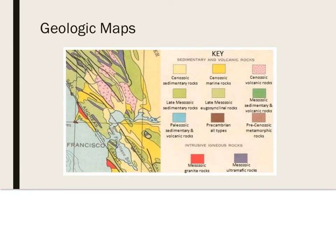Let's look at some geologic maps. They are used by geologists to share information about the rocks in a certain area. The colors on a map represent the type of rock at the surface. Different colors and patterns are used to show different types or ages of rocks. For example, areas colored red represent granite rock from the Mesozoic era. Geologic maps also include symbols to mark other geologic features, such as fault lines, which are labeled with solid or dotted black lines.